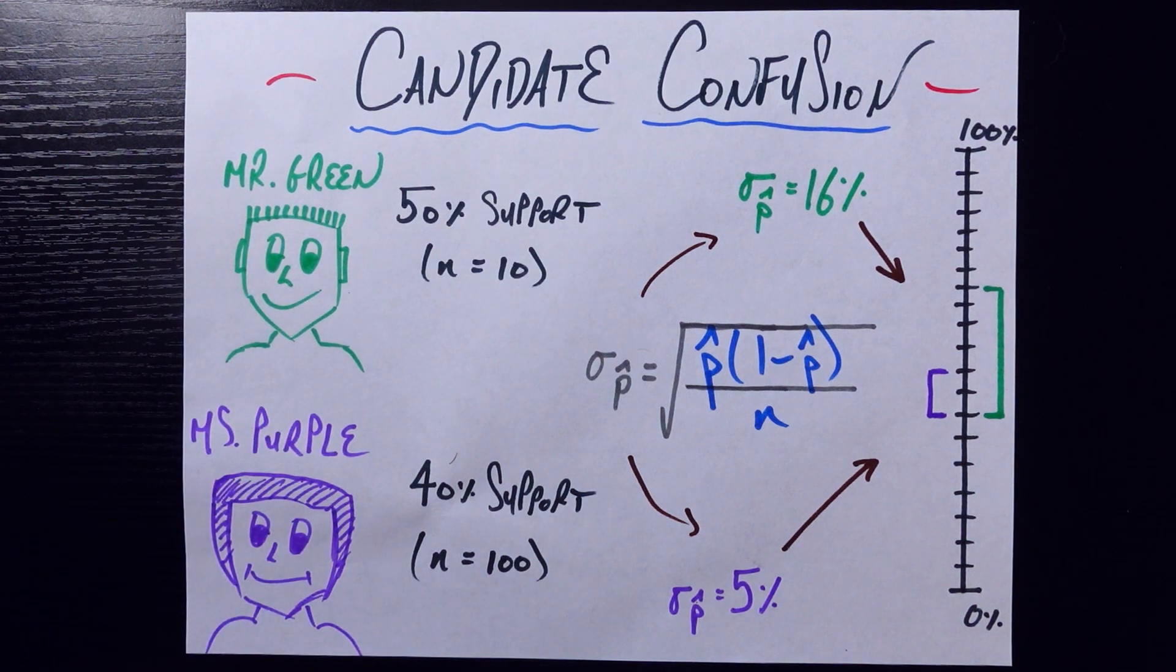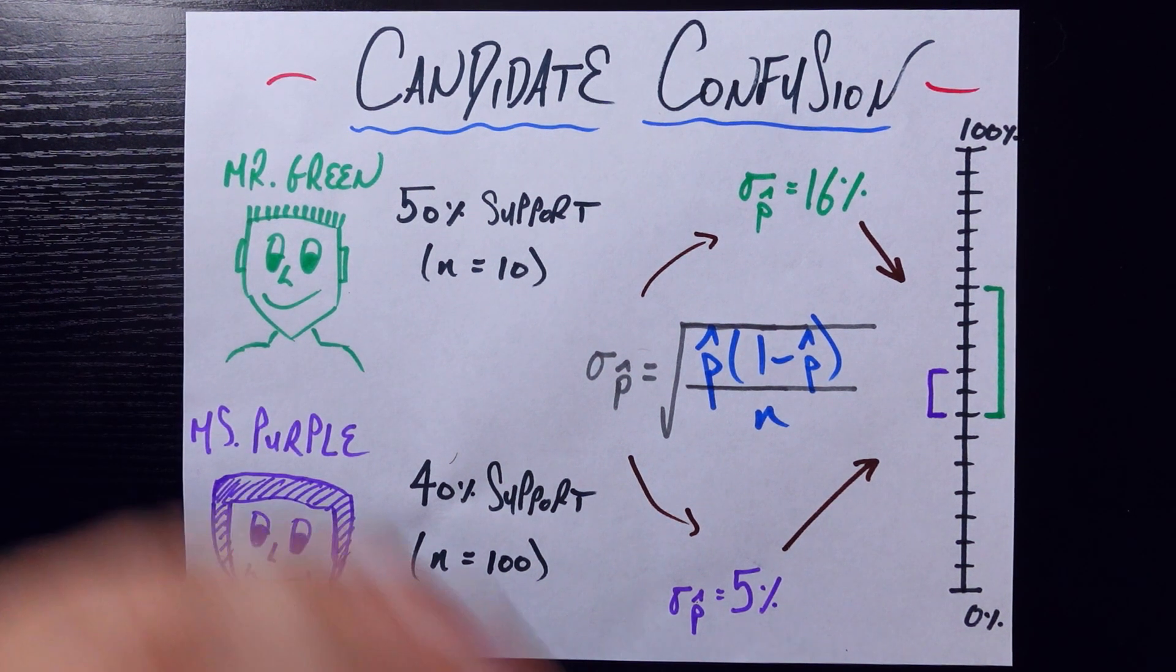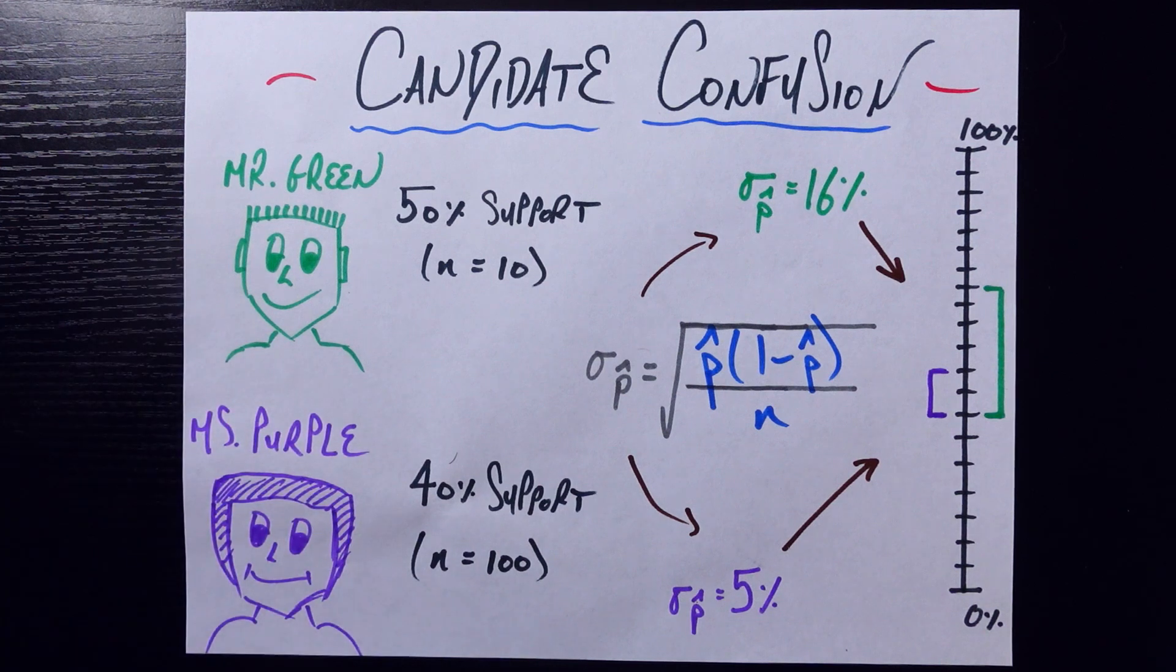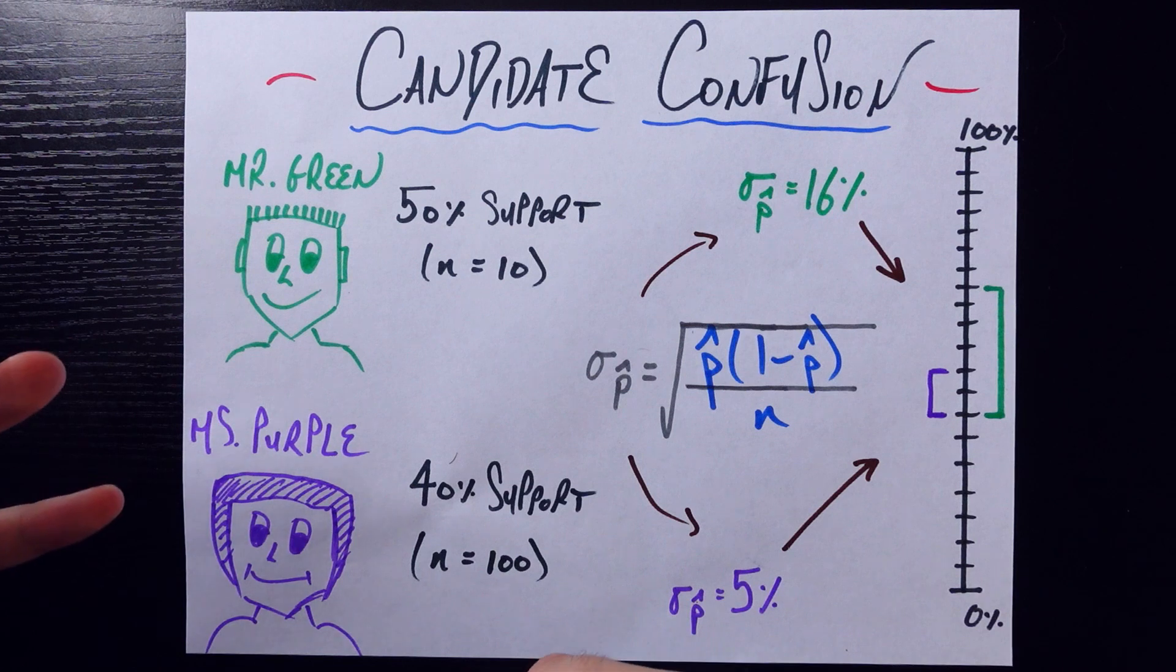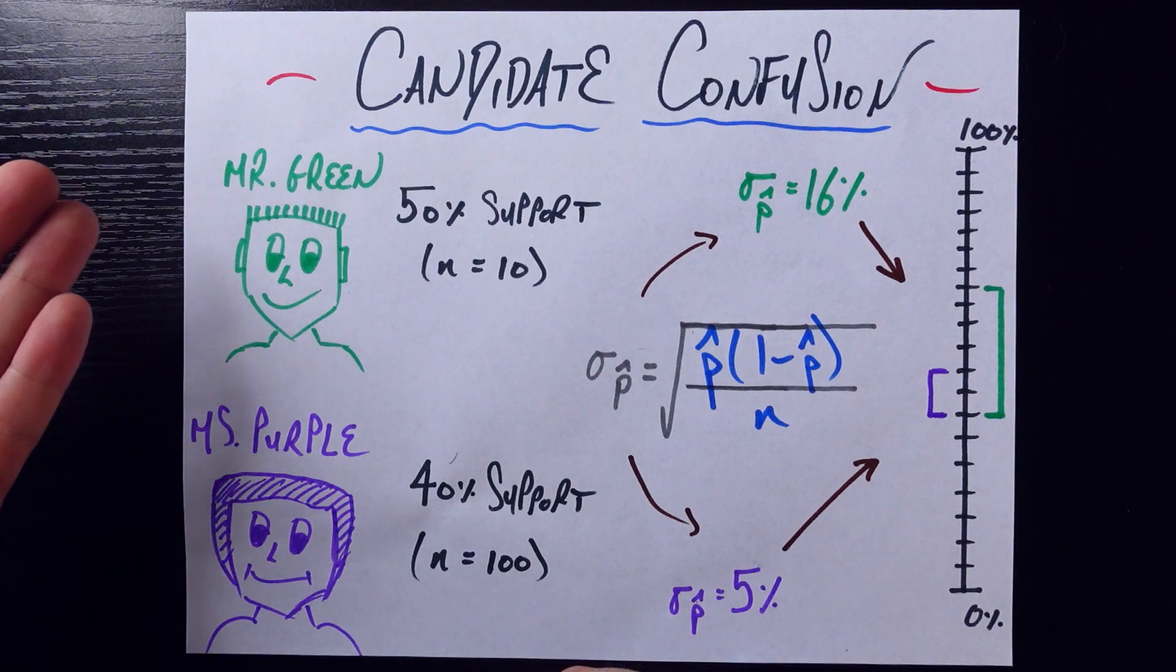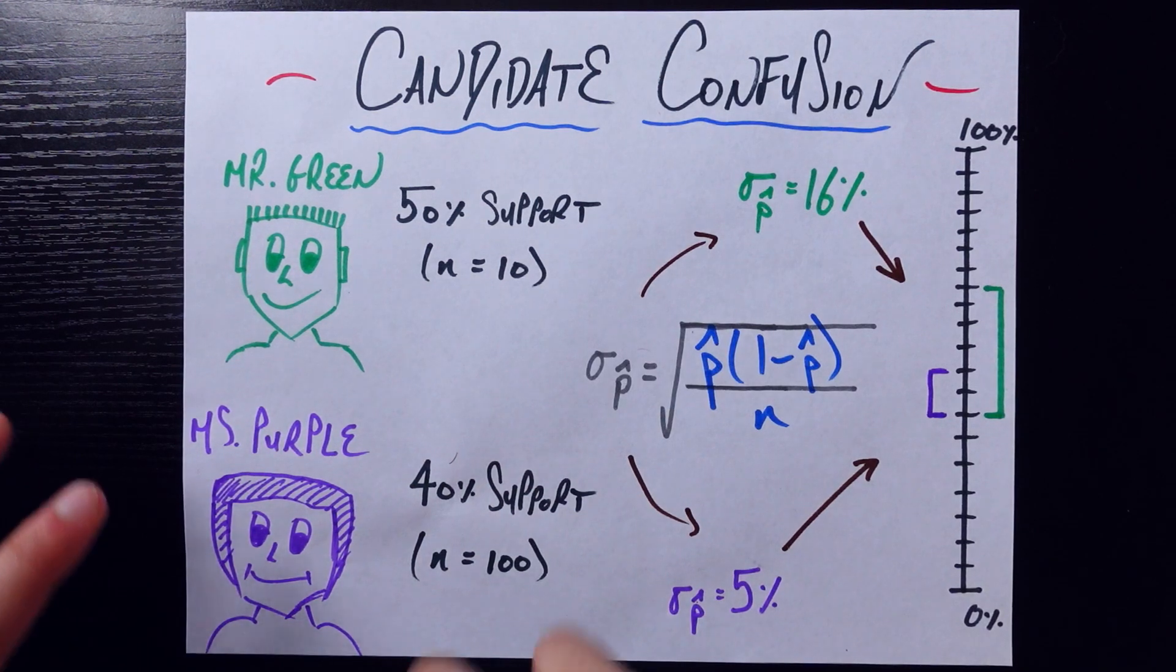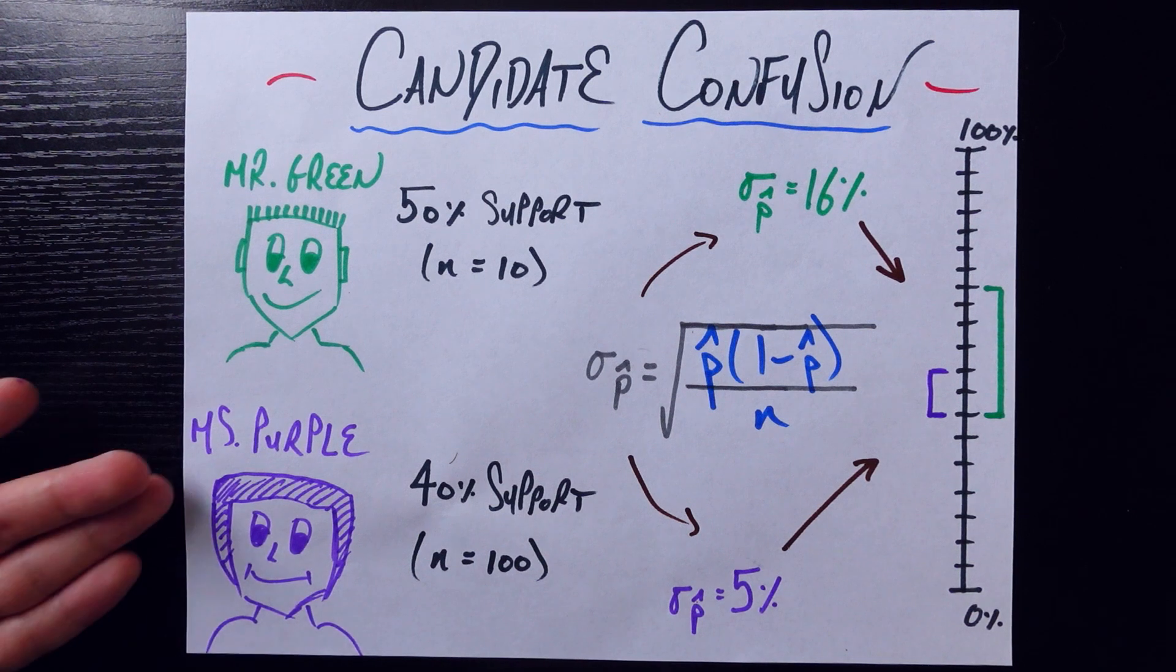Let's say there's a local election going on in your town with two candidates, Mr. Green and Ms. Purple. Now let's say the local polling agency goes out and surveys some set of people and asks the simple question, Do you support Mr. Green? And for a different set of random people, they ask the question, Do you support Ms. Purple?